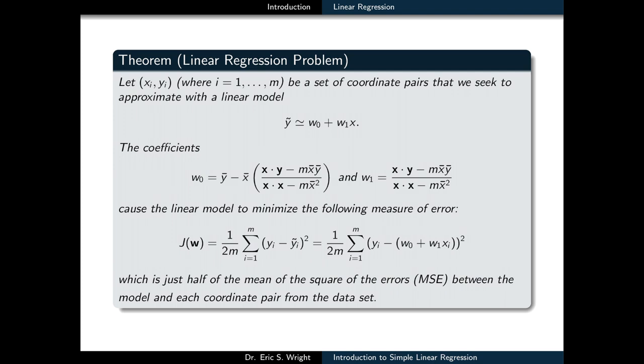I'm not going to read these formulas out, but if you examine them, you'll see that they depend on a few important quantities. They depend on both the mean of the x and y-coordinates that appear in the data set, that's x bar and y bar. They also depend on dot products, which we'll define in a moment, of the full set of x-coordinates and y-coordinates. And finally, these formulas depend on m, the number of data points that appear in the data set.